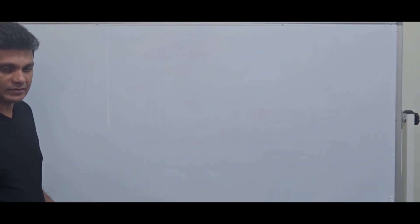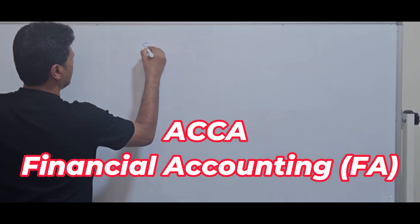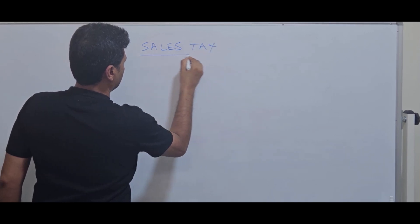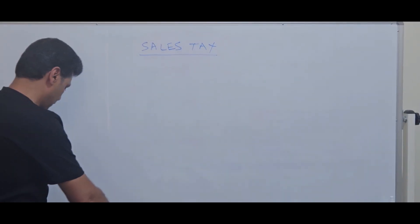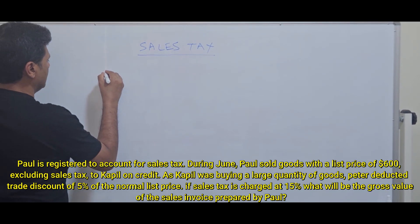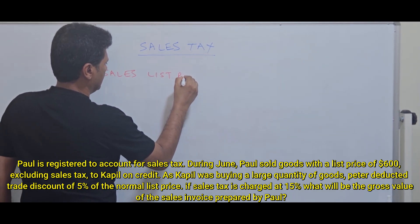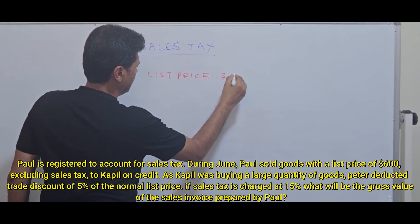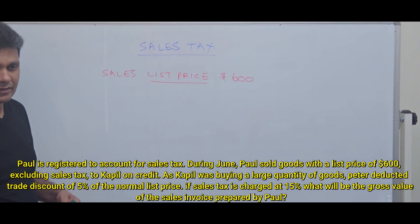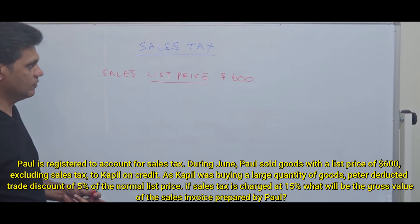Shall we discuss the questions? This is about sales tax. The list price is $600, excluding tax. So what does it mean? List price $600 means the price is exclusive of tax.